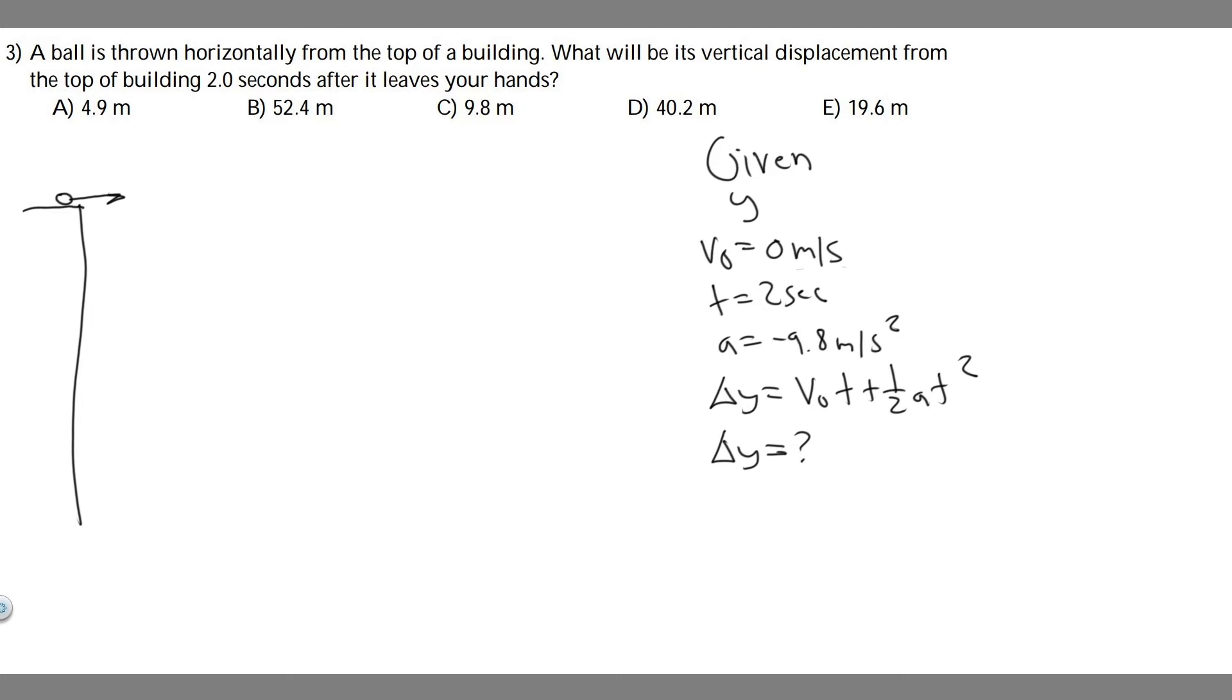We're also given, we're trying to find its vertical displacement from the top of the building two seconds after it leaves the hand. So it's going to go something like this, and then imagine two seconds passes, and we're trying to find its distance right here. So this is basically delta y. And so we know t equals two seconds.